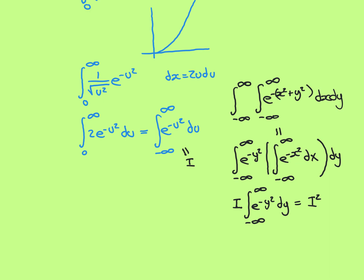That inner integral is obviously the value I we're trying to find, so we can replace it with I. Since I is a constant, we can pull it out of the outer integral, giving I times the integral from negative infinity to infinity of e to the negative y squared dy, which is again just I. So the whole thing comes out as I squared. If we can find what this bivariate integral is, we just take the square root to get I.